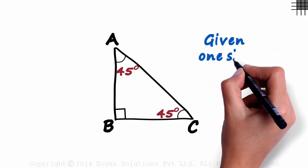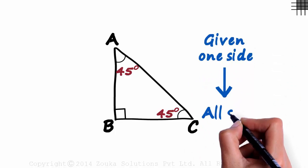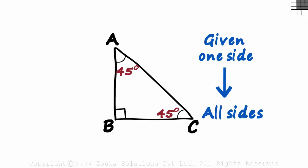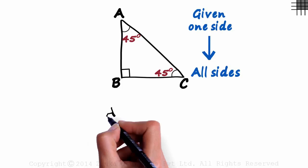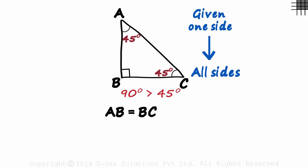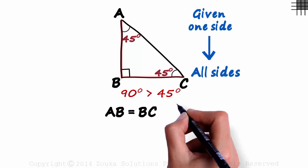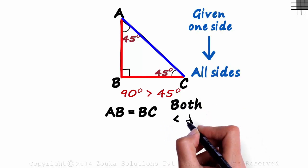It means given one side, we can find the lengths of all the sides. We also know that sides opposite equal angles are equal, so AB will be equal to BC. And as 90 is greater than 45, both these sides will be smaller than AC.